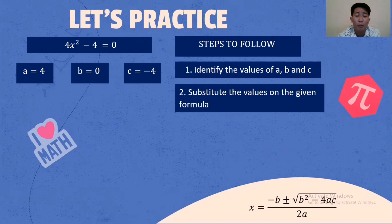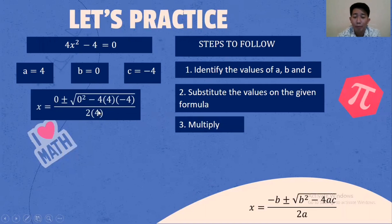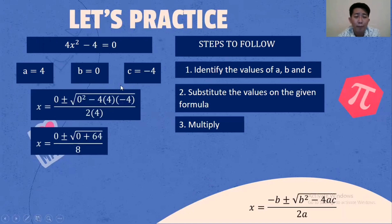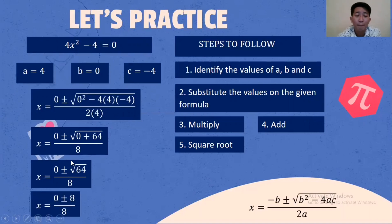Substitute the values on the formula. B is 0, A is 4, C is negative 4, A is 4. Multiply: 0 times 0 is 0. 4 times 4 is 16, times negative 4 is negative 64, but negative 4 times 4 times negative 4 gives positive 64. 2 times 4 is 8. Then 0 plus 64 gives us the square root of 64. The square root of 64 is 8.